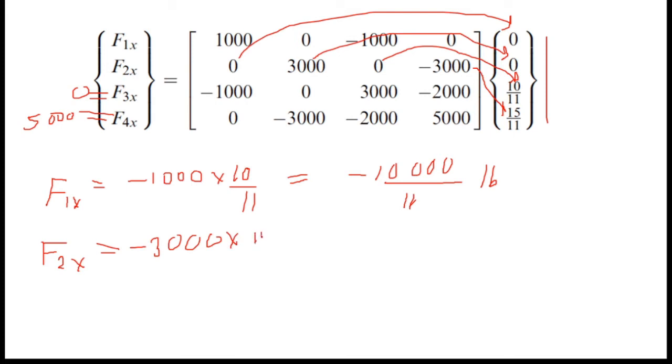So I can simplify this as 15 times 3 is 45, minus 45,000 over 11.